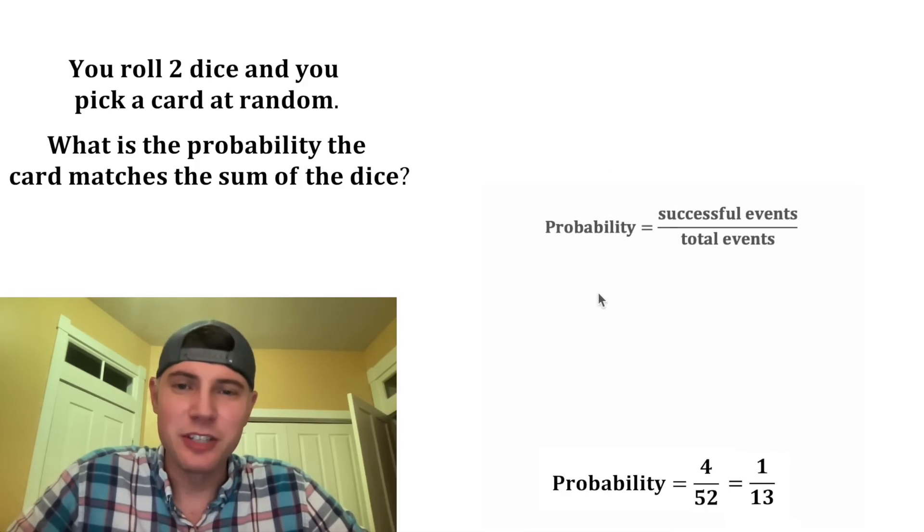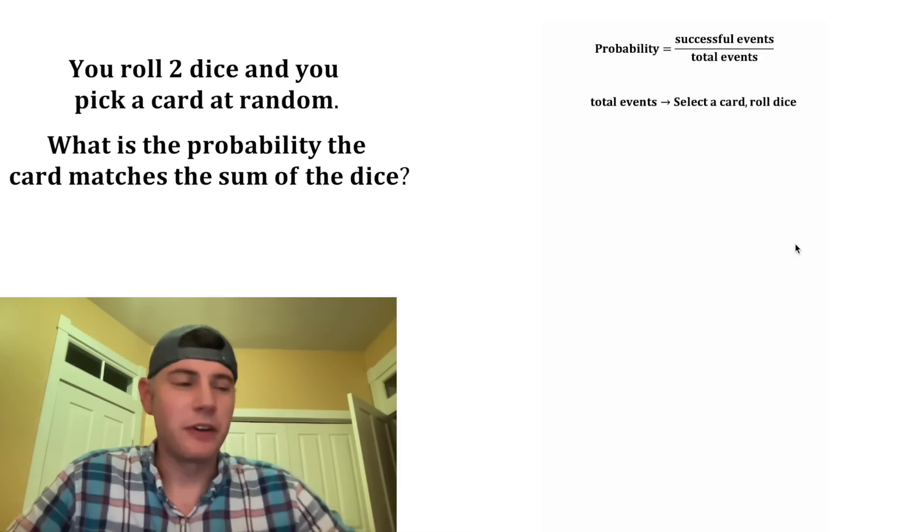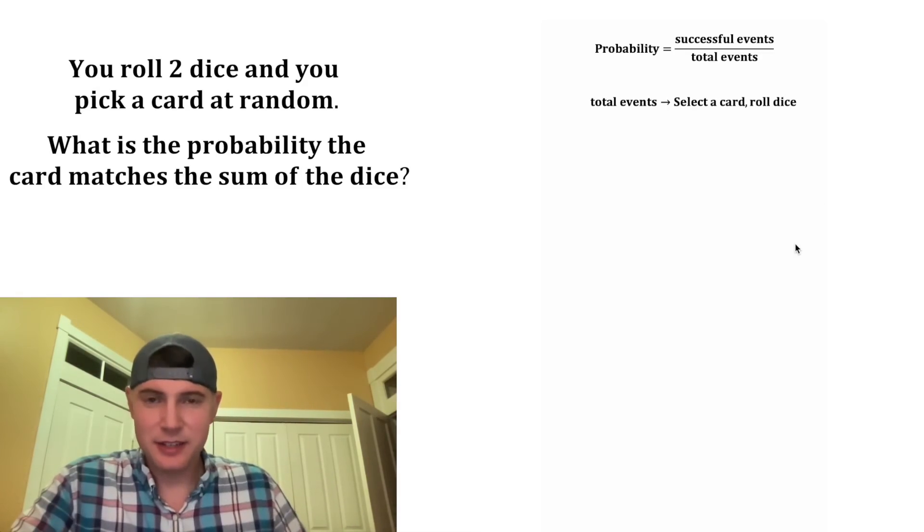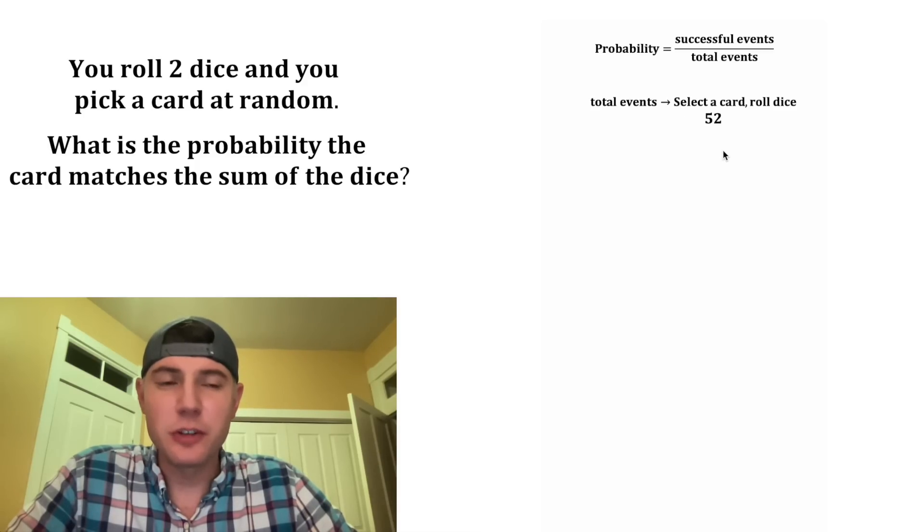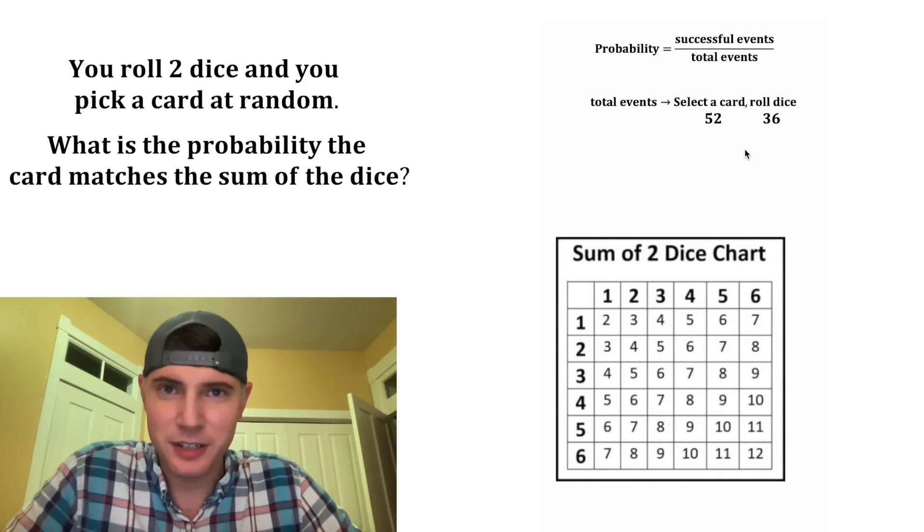But we can check it by using this definition of probability that it's the total successful events over the total possible events. So first for the total possible events, we're going to be selecting a card and rolling dice. When selecting a card, there are 52 possibilities. And when rolling dice, there are 36 possibilities. Here's the table showing all 36 possibilities.